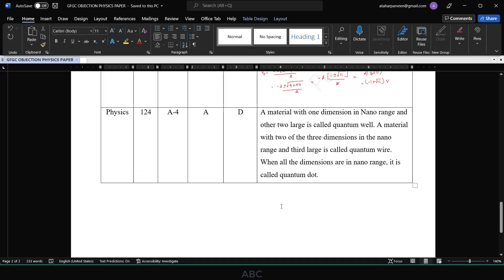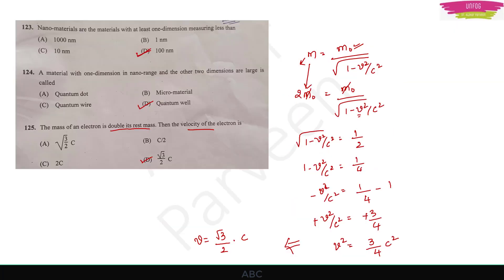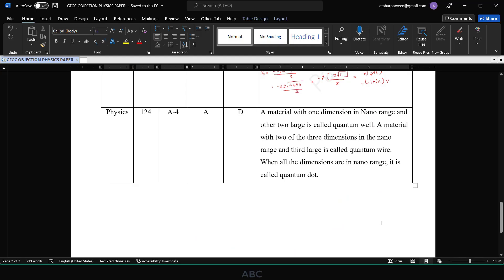Next question is question number 124, the last but one question. The question is a material with one dimension in nano range and the other two dimensions are large is called what. According to me it should be quantum well, but in the provisional key they have given it as quantum dot option A. I have raised objection with this question as well. For me option D should be the right answer.